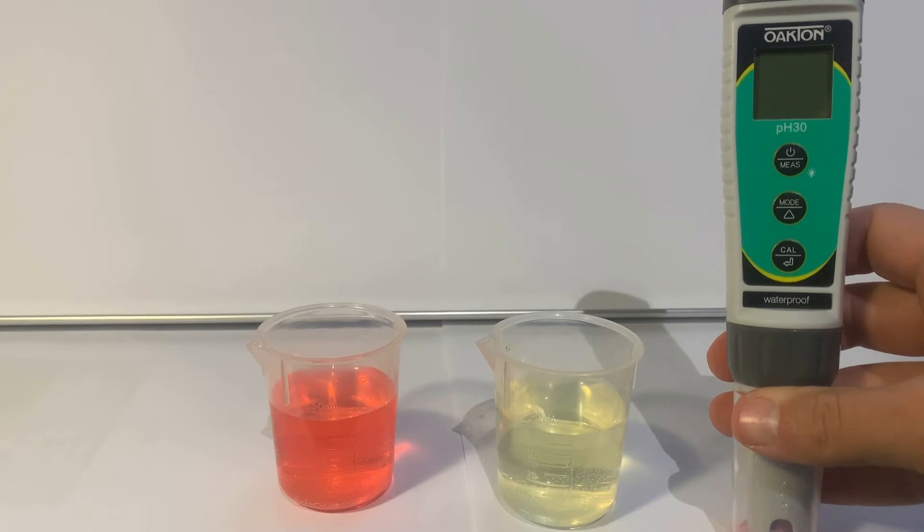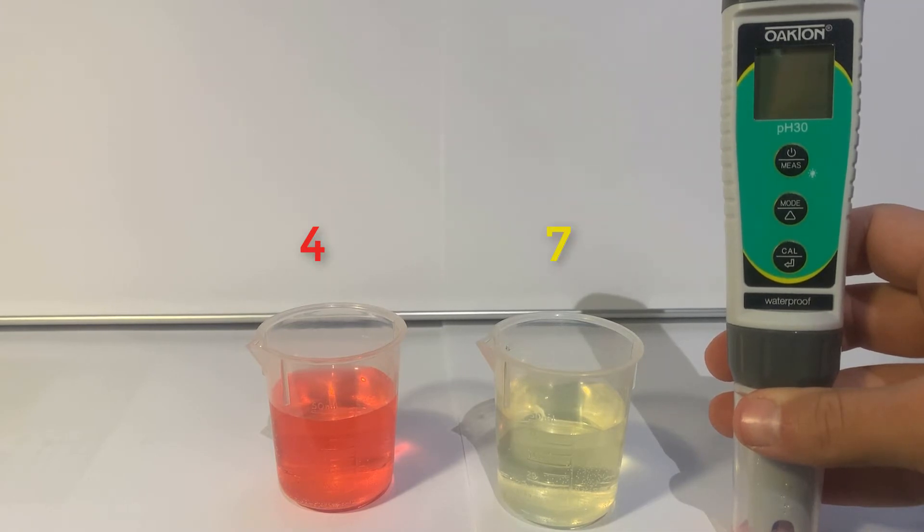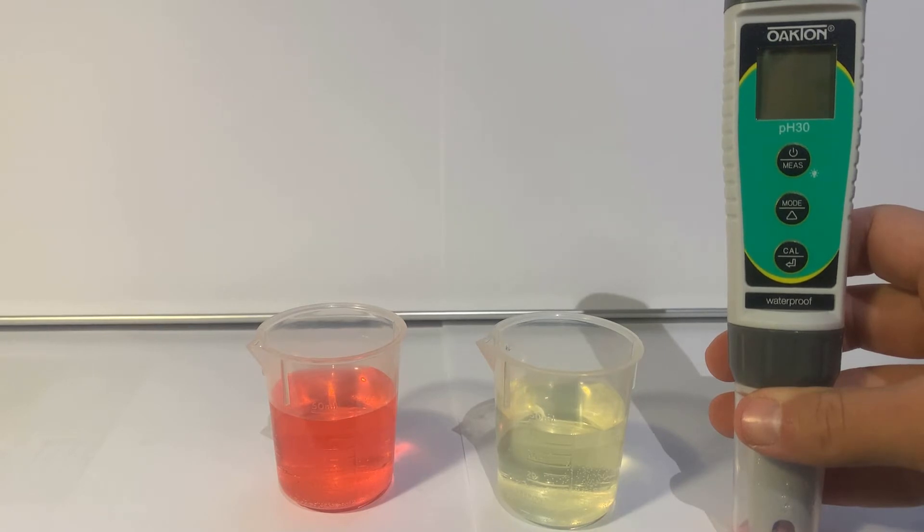Today we are using Buffer 4 and Buffer 7 to calibrate. 4 is in red and 7 is in yellow. Make sure that you use the solutions that bracket your normal reading when you calibrate.